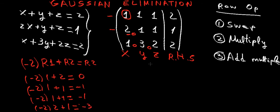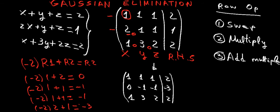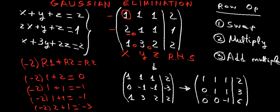The matrix then becomes: we keep the first row exactly the same, replace the second row with the values we just calculated — 0, minus 1, minus 1, minus 3 — and keep the third row. We then continue with similar calculations to get zeros in the remaining two positions below the diagonal, giving us the final upper triangular matrix.